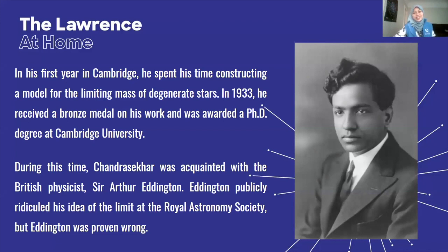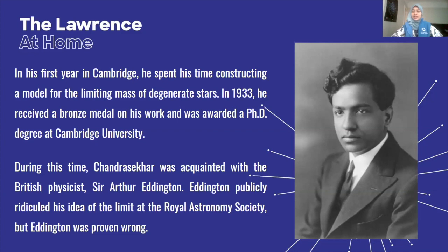Going back to Chandrasekhar — in 1933, he received a bronze medal on his work, and he was awarded a PhD degree at Cambridge University. And it was during this time that Chandrasekhar was acquainted with the British physicist Sir Arthur Eddington. And their encounter wasn't necessarily the nicest, because Eddington publicly ridiculed Chandrasekhar's idea of the limit, and he did so at the Royal Astronomy Society in front of everyone. However, further calculations done by computers proved that Eddington was wrong and proved that Chandrasekhar was right.